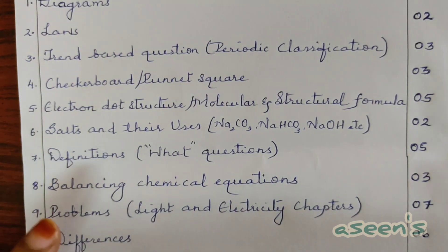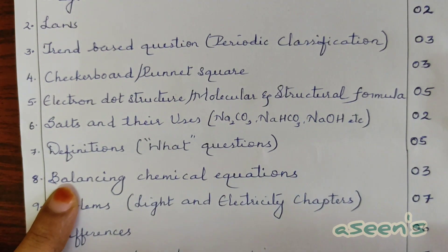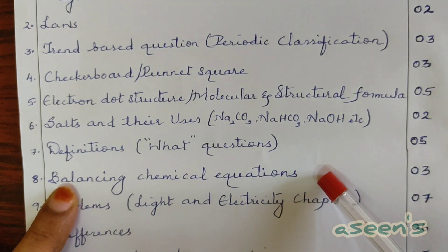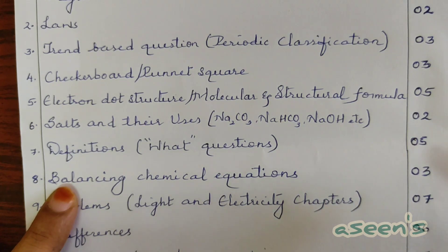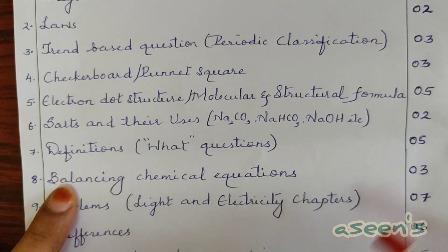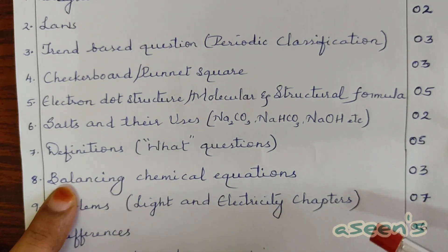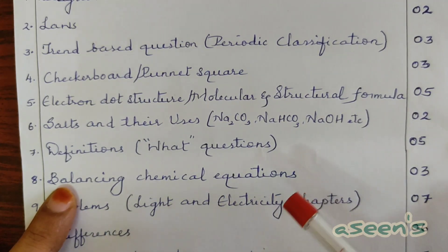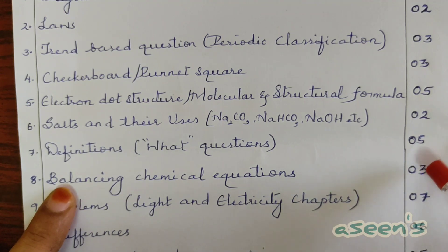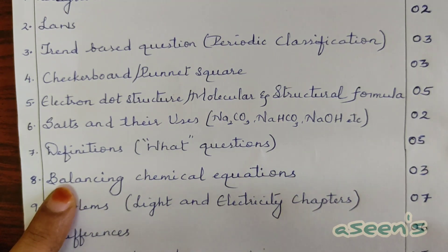Next, balancing chemical equations, mainly from the first chapter chemical reactions and equations. Under the balancing part and identifying the chemical equations, the types of chemical equations, all together for identifying as well as balancing, around three marks are going to be allotted. Definitely an important concept.